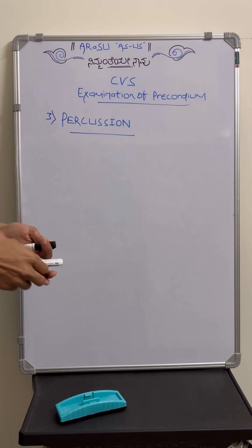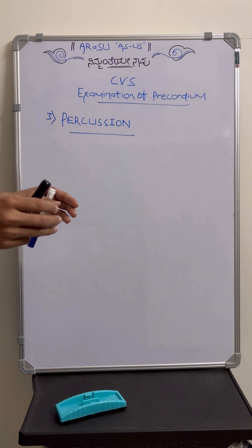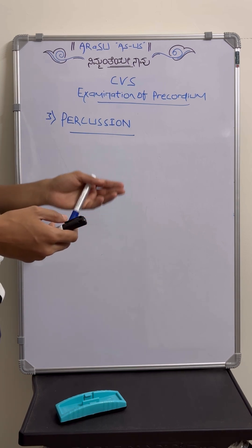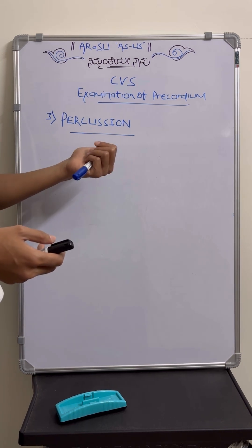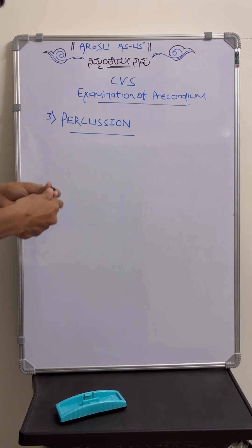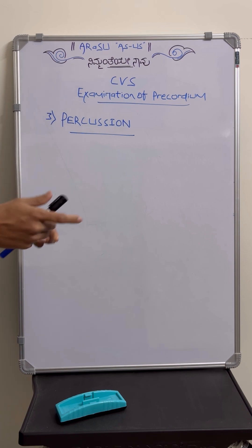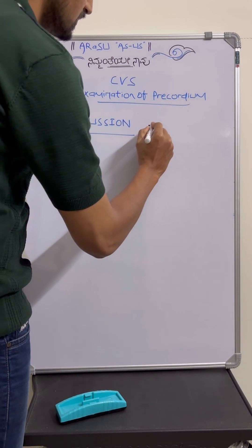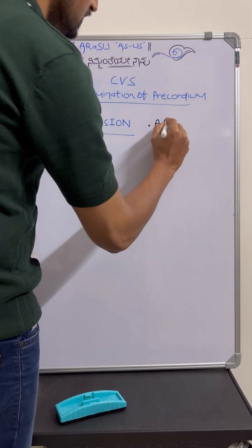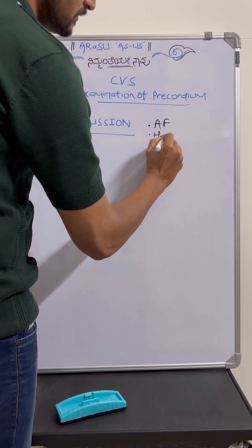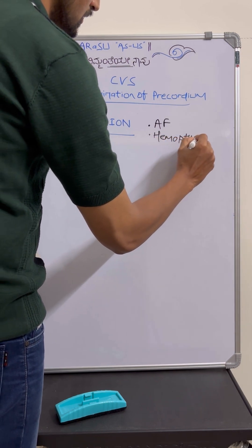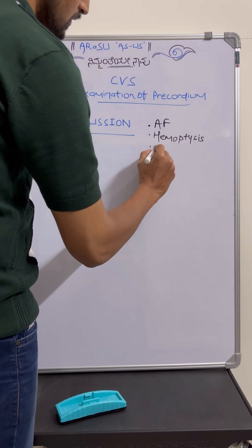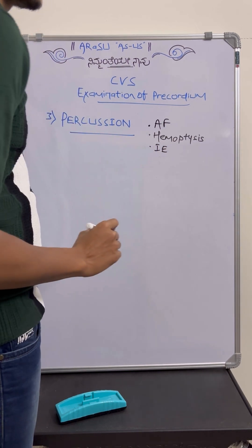Coming to percussion of the precordium. We will skip this part most of the time, but in practical exams the examiner will be fond of asking how to do percussion. The contraindications are only three: one is atrial fibrillation, second is presence of hemoptysis, and third is suspicion of infective endocarditis.